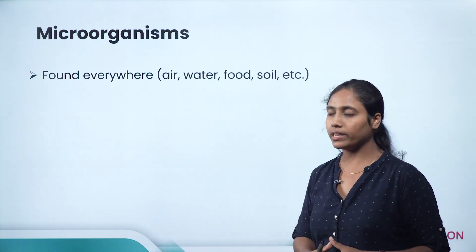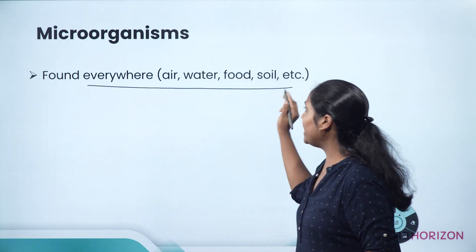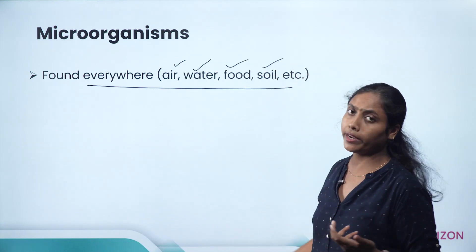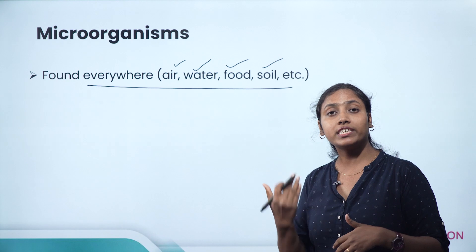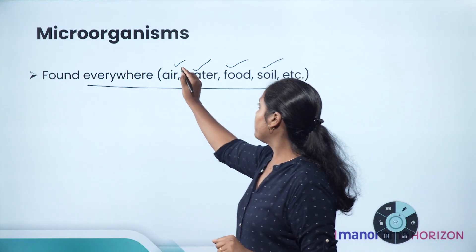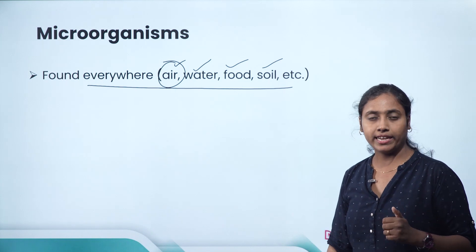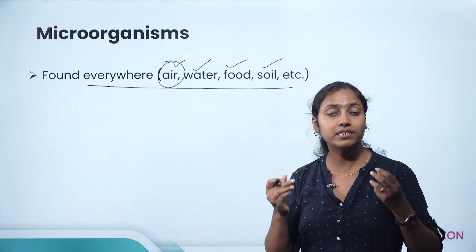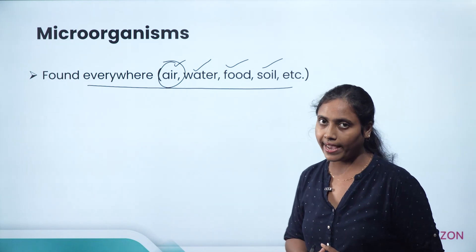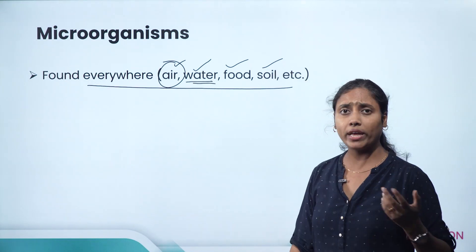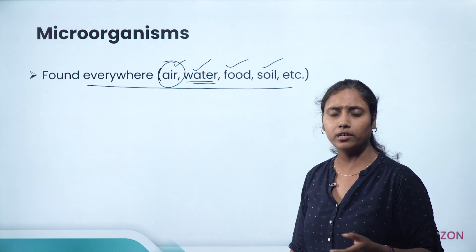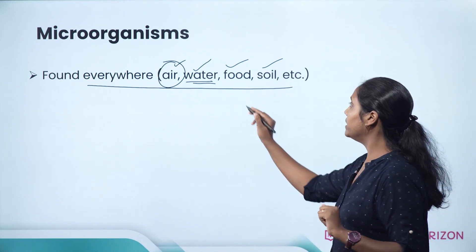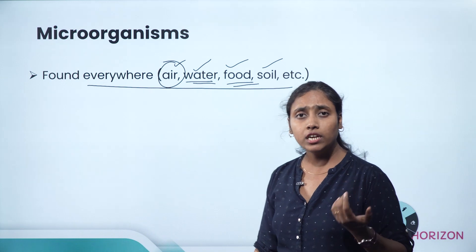Now where are microorganisms found? They are found everywhere — in air, in water, in food, in soil, even inside our living body and outside our living body. When the corona disease spread, we were asked to wear masks because these microorganisms were present in the air. They are found in all types of water — salt water, fresh water, or even stagnant water in your compound. Microorganisms are also found in food.